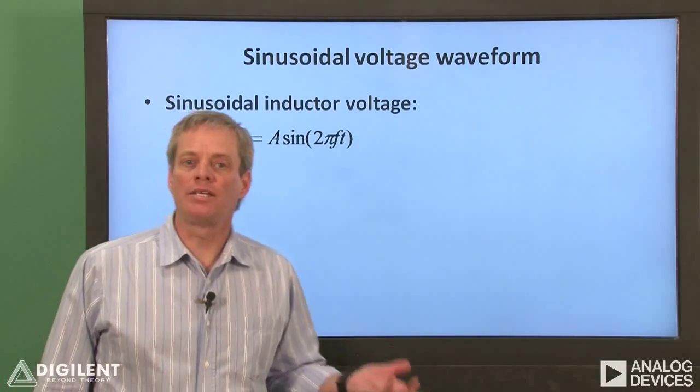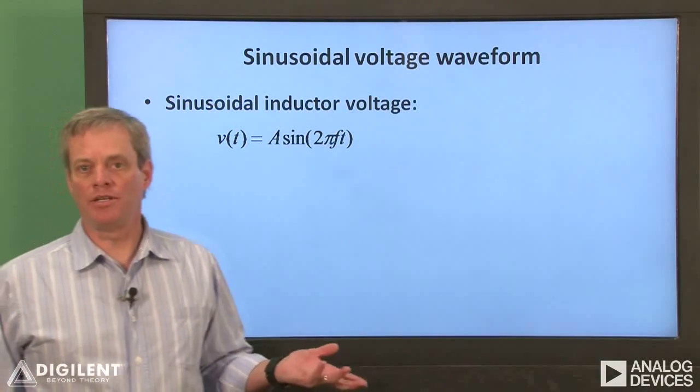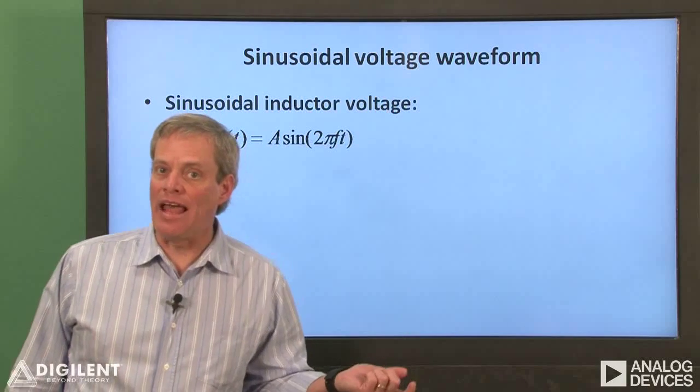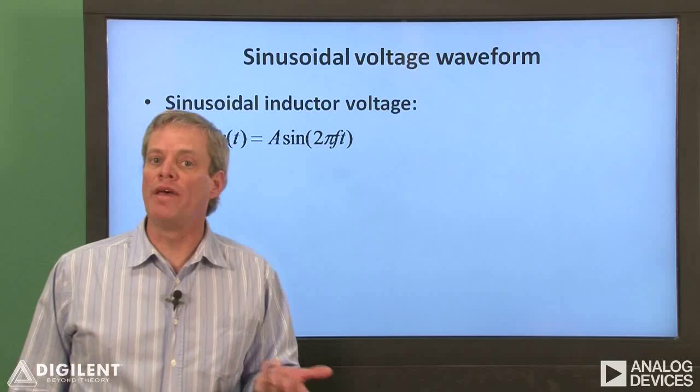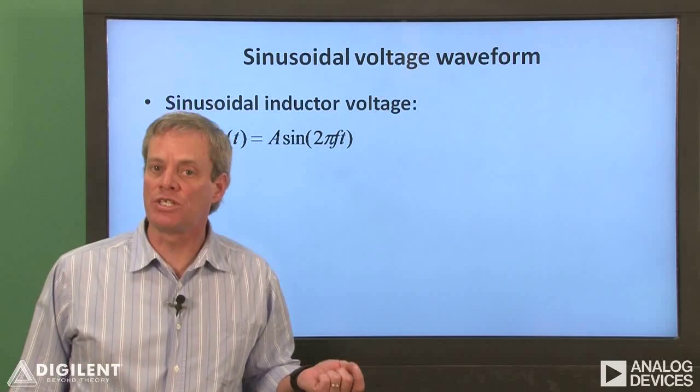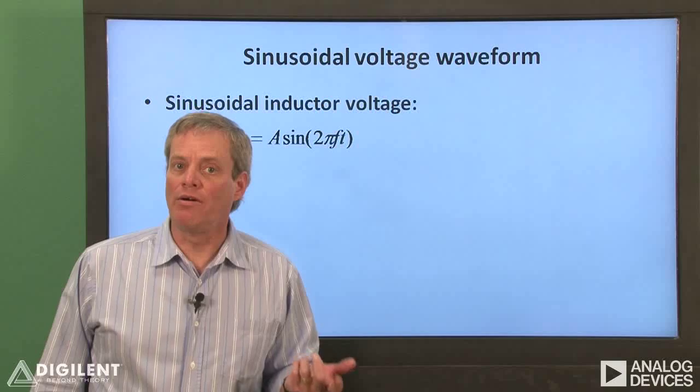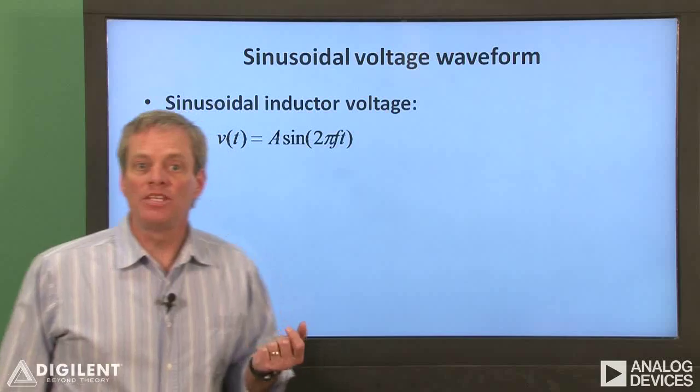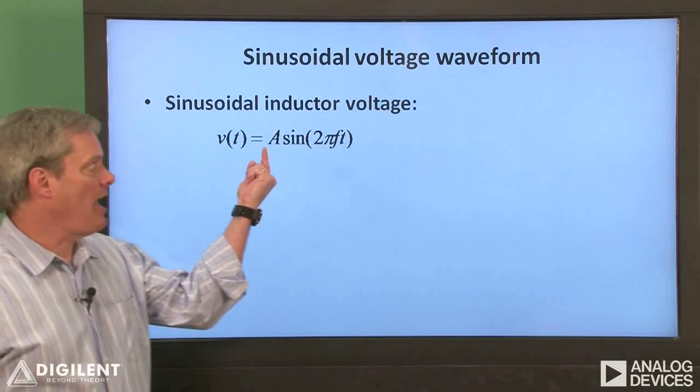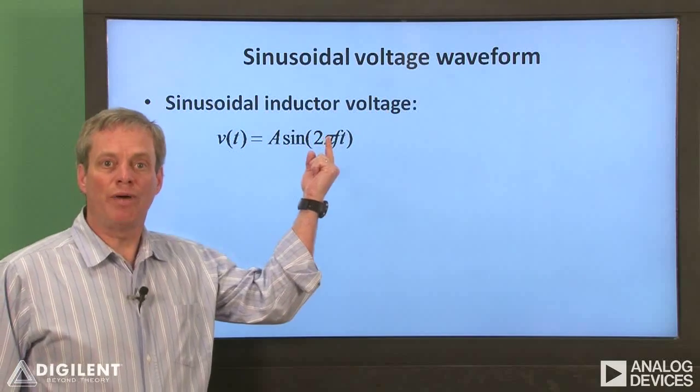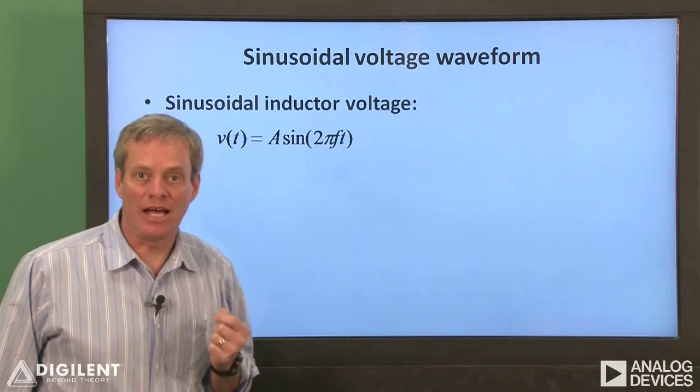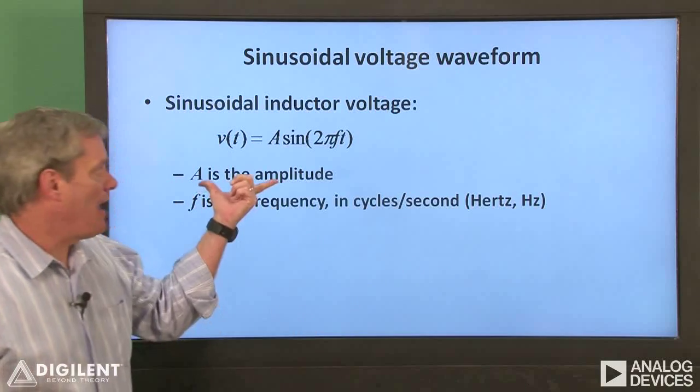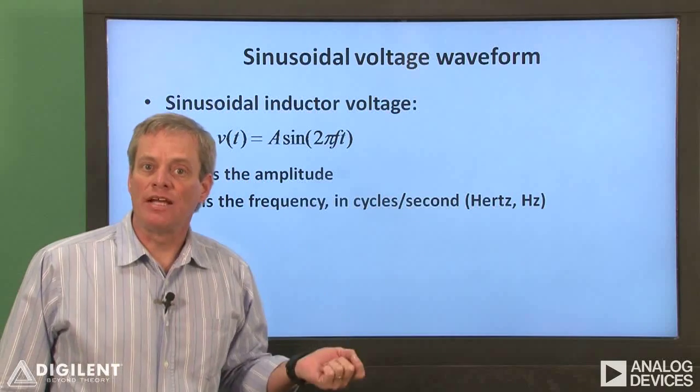In our first demonstration, we'll apply a sinusoidal voltage difference to our inductor. Mathematically, a sinusoid is expressed as A, an amplitude, times sine of omega times T, where omega is the frequency in radians per second. For our lab work, however, we'll represent our frequency in cycles per second, or hertz. This means that our sinusoid is going to be written as A times sine of 2π times F times time, where F is the frequency in cycles per second, or hertz, and A is the peak value of the sinusoid.